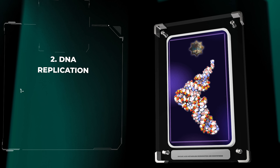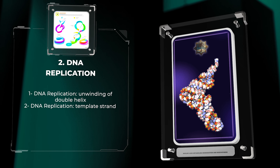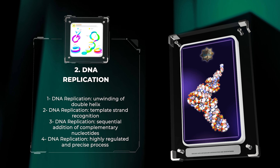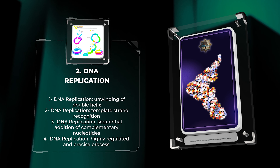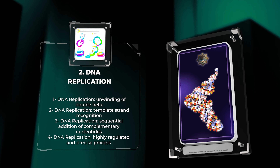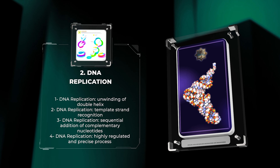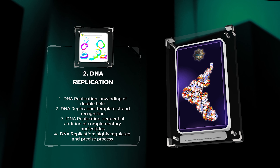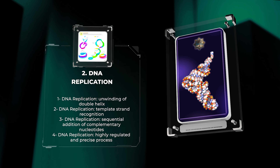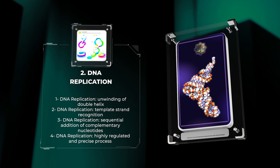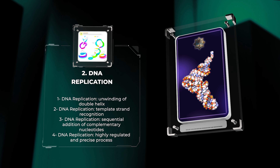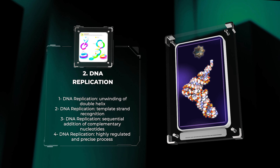Moving forward, we uncover the intricate process of DNA replication, where an exact copy of DNA is synthesized. This process involves the unwinding of the double helix, template strand recognition, and the sequential addition of complementary nucleotides by DNA polymerase enzymes. It is a highly regulated and precise process vital for cell division and genetic stability.